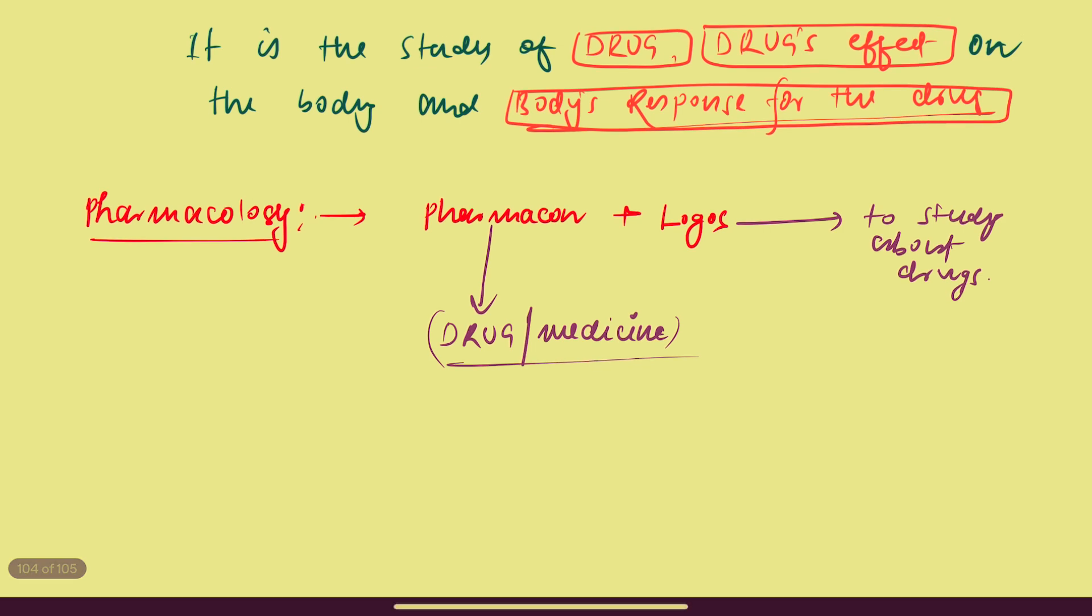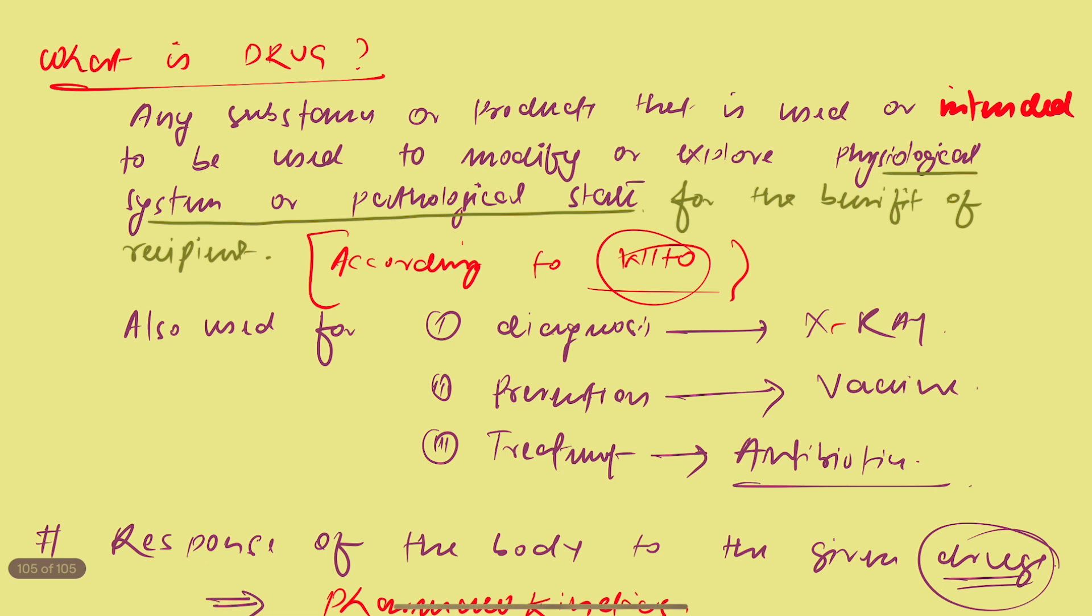So pharmacology is basically a word that is the combination of two words, that is pharmakon and logos. The pharmakon refers to drugs and medicine, and logos means the study. So basically it is pharmacology.